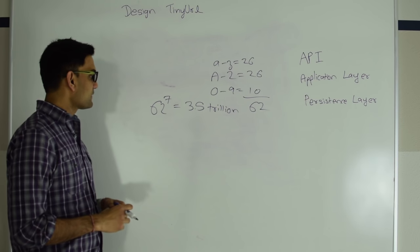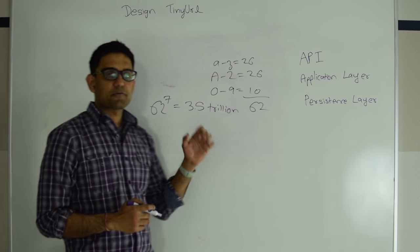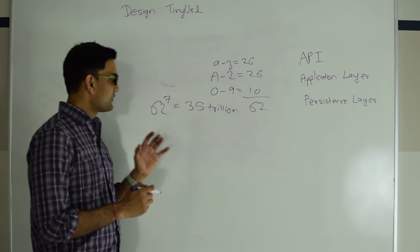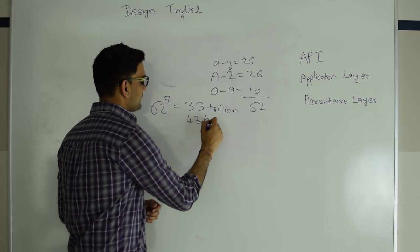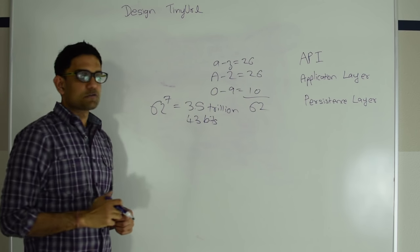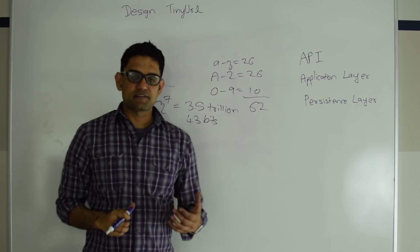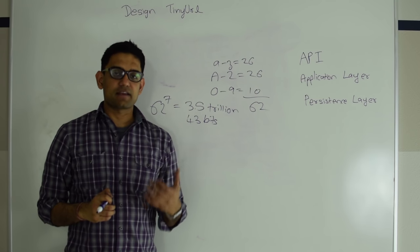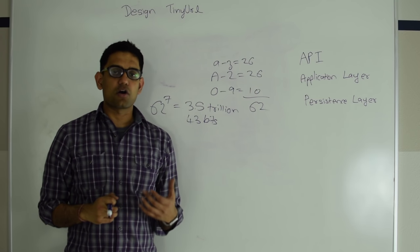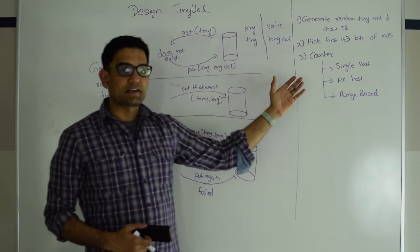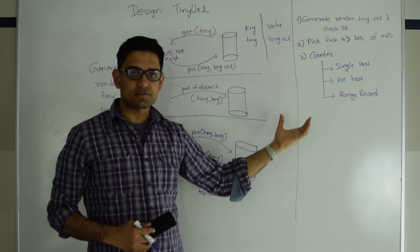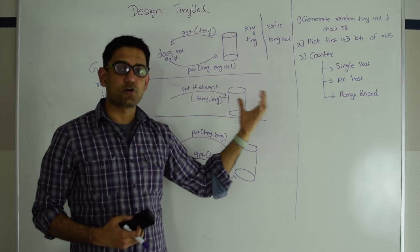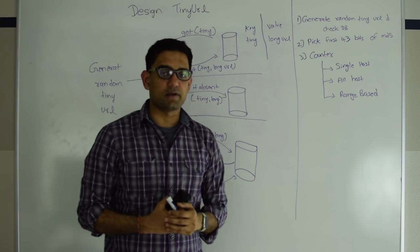Also notice that any number from 0 to 3.5 trillion can be represented by 43 bits. So next, let's see what are the different techniques to generate a 7-character long URL as uniquely as possible. These are some of the techniques — by no means is this list exhaustive, but it will give you a good idea.